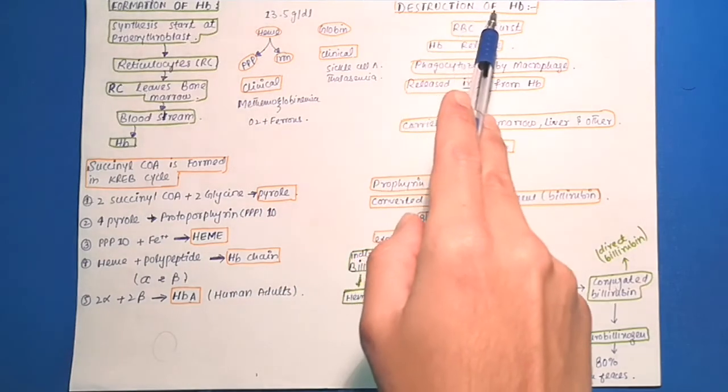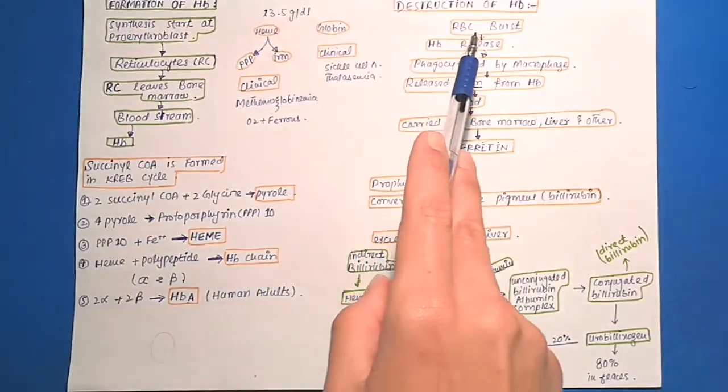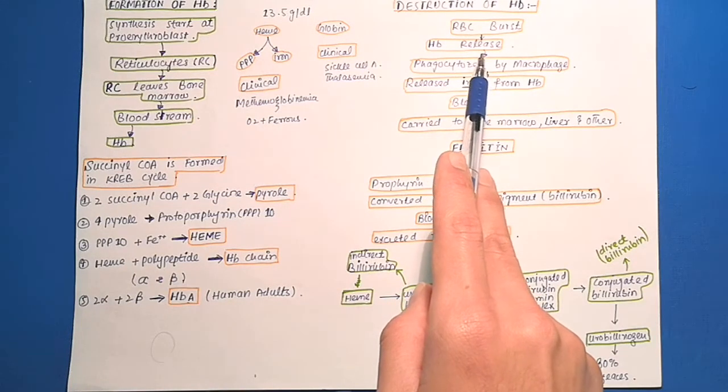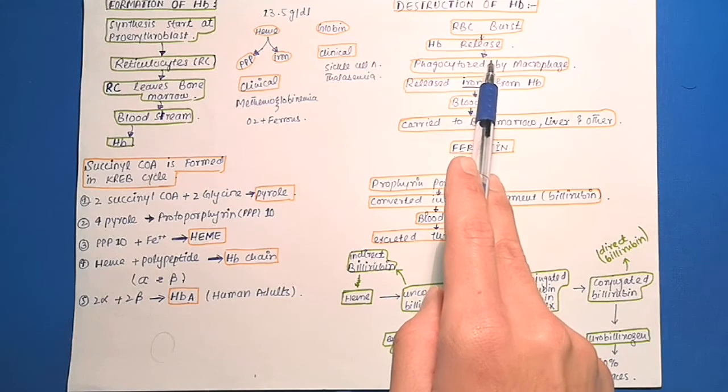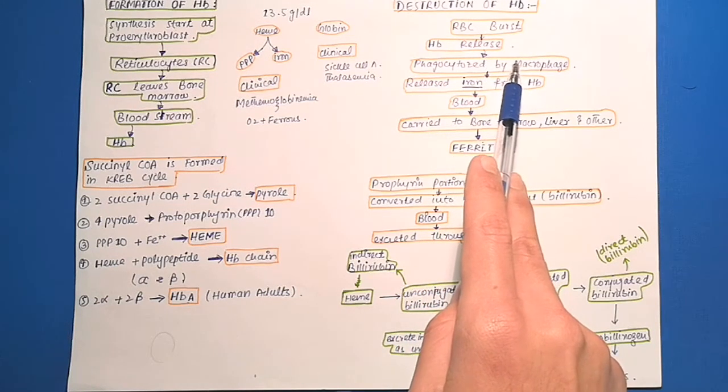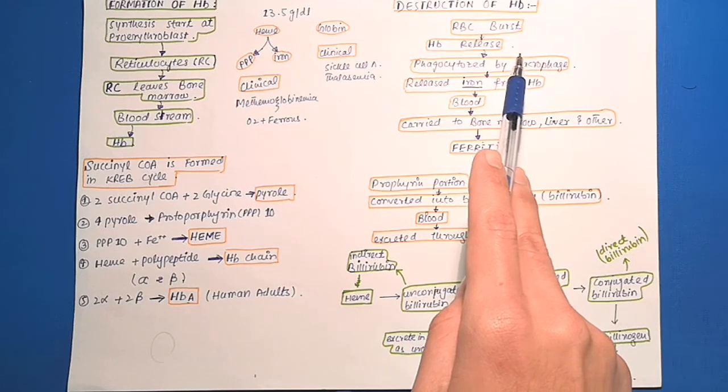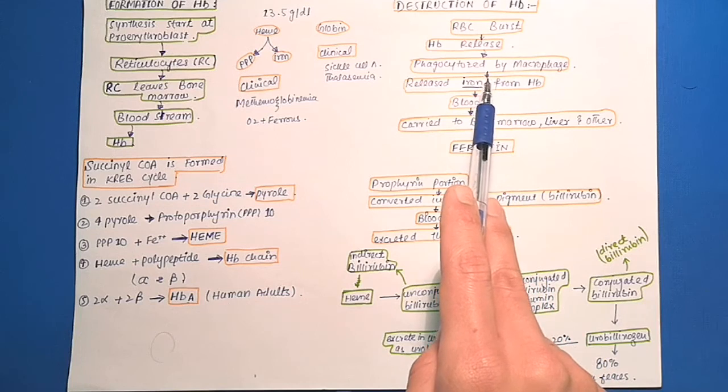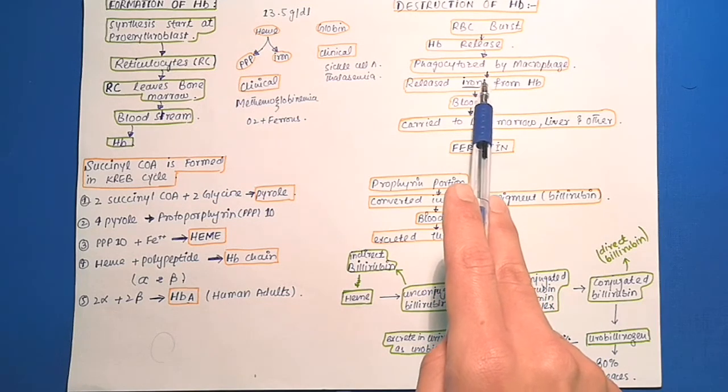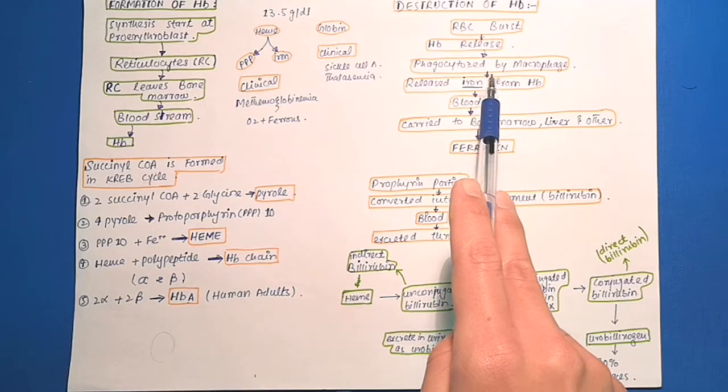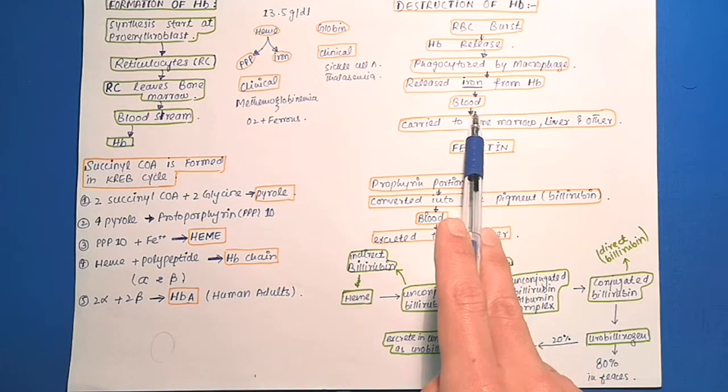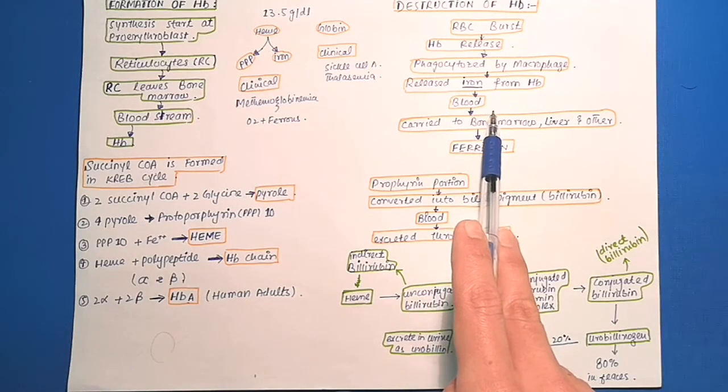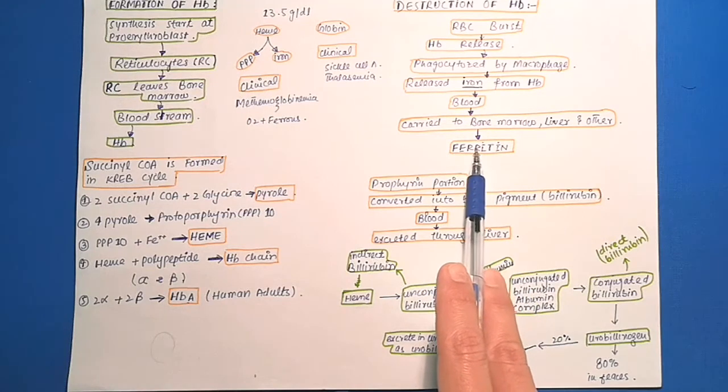The destruction of red blood cells. When the red blood cells burst, they release hemoglobin. And then this hemoglobin is phagocytosed by macrophages in Kupffer cells and the macrophages of spleen and bone marrow. In a few days, the macrophages release the iron from hemoglobin and pass it back into the blood.